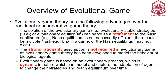Evolutionary game theory has advantages over typical non-cooperative game theory. The solution of an evolutionary game, known as evolutionary stable strategy (ESS) or evolutionary equilibrium, can serve as a refinement of Nash equilibrium. Nash equilibrium is not always sufficient - there could be multiple or no Nash equilibria. Evolutionary stable strategy can help solve such situations to get a refined outcome known as evolutionary equilibrium.